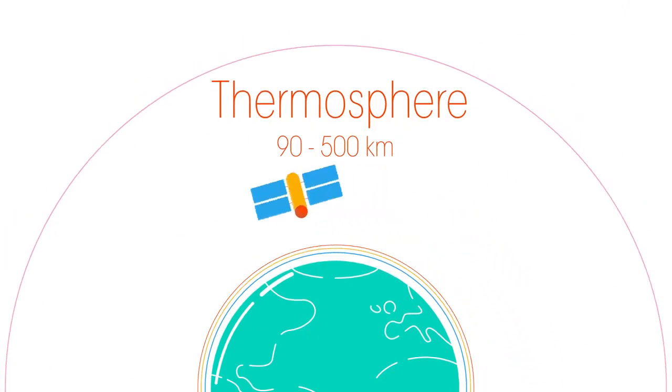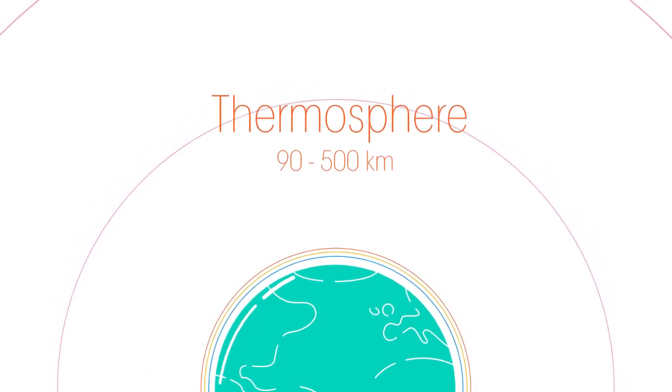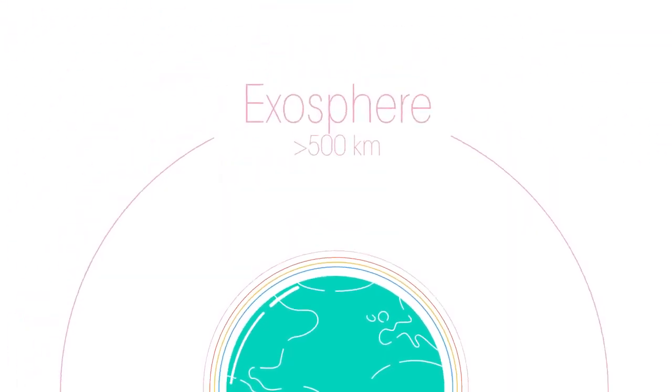Then there's the thermosphere. The International Space Station orbits the Earth at 400 kilometers, and then the exosphere is where our atmosphere merges into outer space.